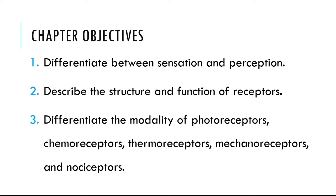Those two words may seem the same to you at first, but we'll pick it apart because they are different. We're going to talk about basic structure of sensory receptors and their function. And then we're going to look at the various types or modes of receptors, including motor receptors, chemoreceptors, thermoreceptors, and mechanoreceptors.